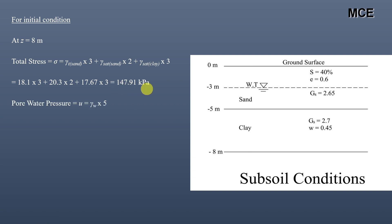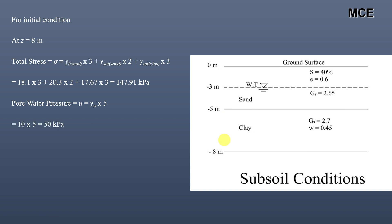Pore water pressure at the bottom of the clay equals unit weight of water multiplied by the depth of water between the water table and the bottom of the clay, which is 5 meters: u = 10 × 5 = 50 kPa. Effective stress = total stress − pore water pressure = 147.91 − 50 = 97.91 kPa. This is the initial condition effective stress.